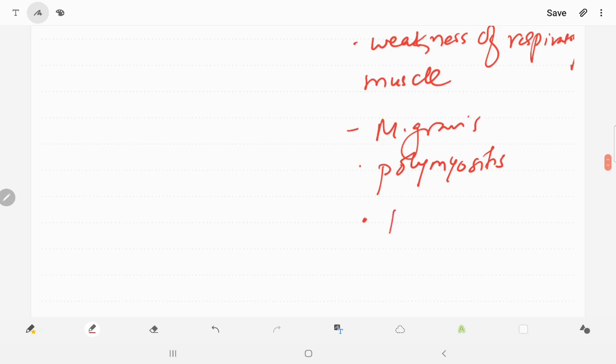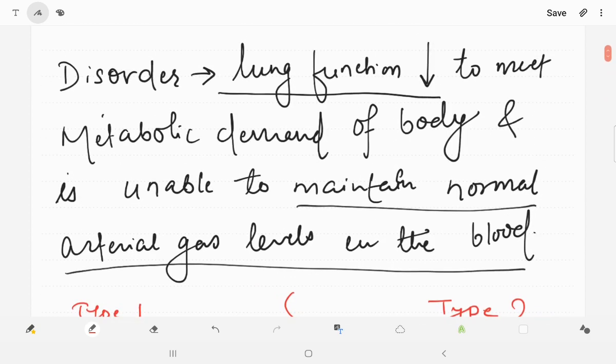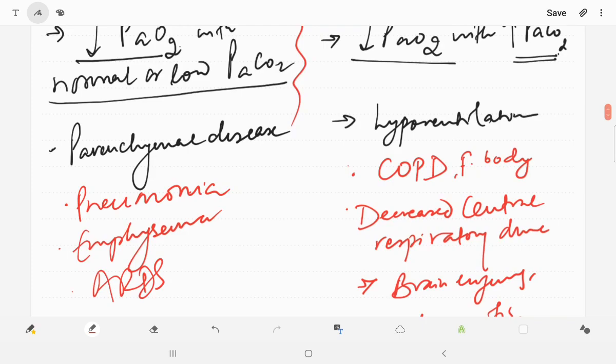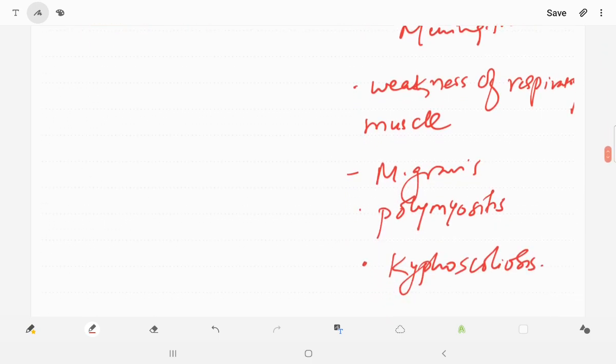And ribcage disorders like kyphoscoliosis. So this is the basic difference between Type 1 and Type 2 respiratory failure and the conditions in which they are going to be present. In summary, we can say that Type 1 respiratory failure will present with hypoxemia with decreased partial pressure of carbon dioxide; however, Type 2 will present with hypoxemia with increased partial pressure of carbon dioxide. Thank you for watching the video. See you all in my next video.